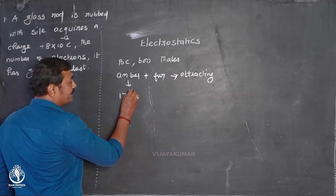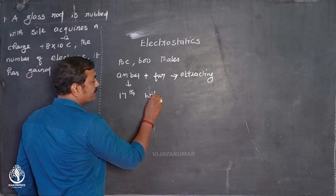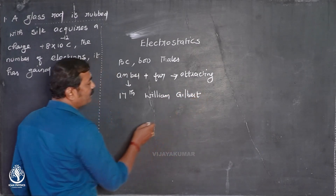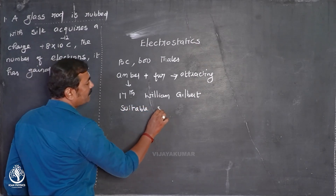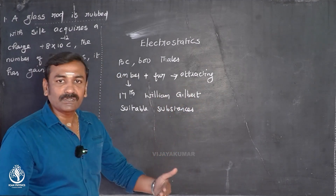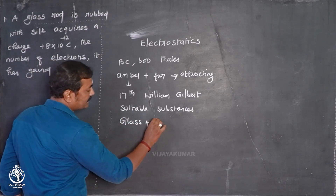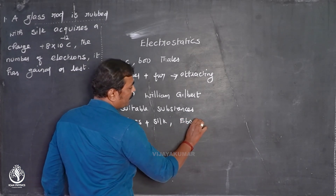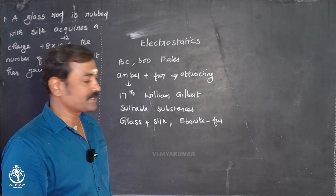During the 17th century, William Gilbert found that when suitable substances are rubbed together, they acquire charge. The suitable substances include glass and silk, and ebonite and fur.